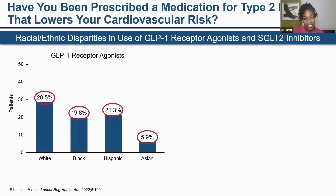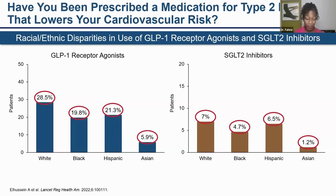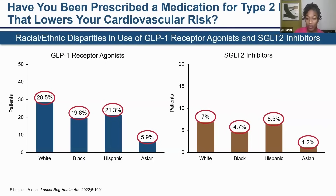When comparing groups with similar employment and insurance status, there's no reason Black patients shouldn't be benefiting from these better medications. Looking at SGLT2 inhibitors: 7 percent of white patients, 4.7 percent of Black patients, 6.5 percent of Hispanic patients, and 1.2 percent of Asian patients are on this class. Almost all diabetic patients in my practice are on a GLP-1 receptor agonist or an SGLT2 inhibitor because of the proven benefits for weight, cardiovascular disease, renal disease, stroke, and heart attack.